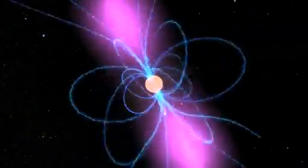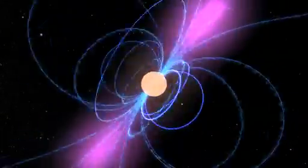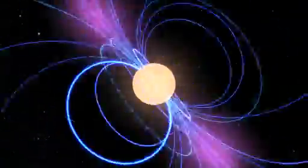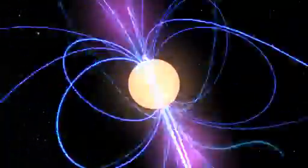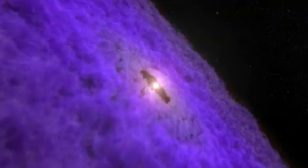A neutron star is what remains when a star several times the mass of the Sun collapses and explodes. With more than the Sun's mass packed into a sphere less than 18 miles across, these objects are incredibly dense. Just a sugar cube-sized piece of neutron star can weigh as much as all the water in the Great Lakes.